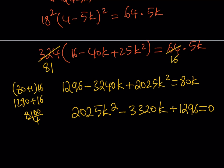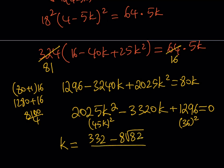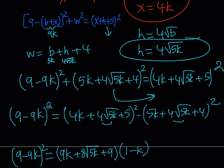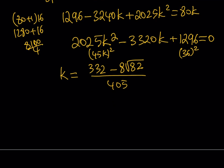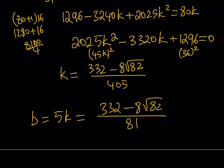Solving the quadratic — noting that 2025 = 45² and 1296 = 36² — gives k = (332 − 8√82) / (4·45). Since b = 5k, multiplying by 5 gives b = (332 − 8√82) / 81. That is the value of b we were looking for.